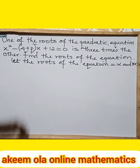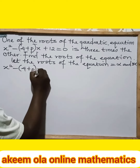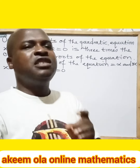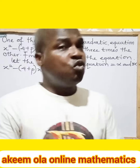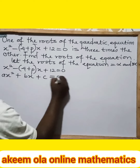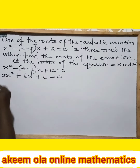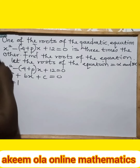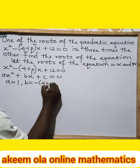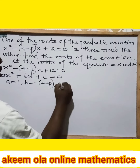If you look at the given equation from the question, we have x squared minus (4 + p)x plus 12 is equal to zero. We are now going to compare this equation with the normal quadratic equation, which is ax squared plus bx plus c is equal to zero. When you compare these two equations together, you will observe that our a is equal to one, our b is equal to minus(4 + p), and our c will now be equal to plus twelve.